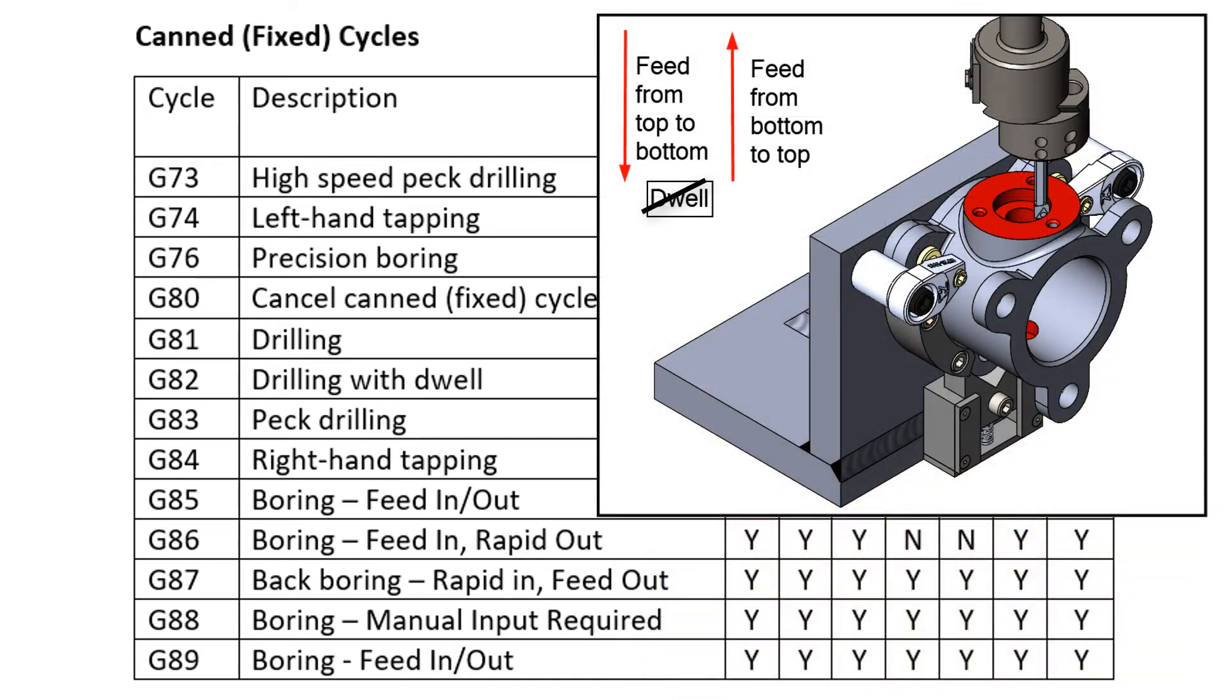The G85 will feed the tool in and out of the hole but will not allow a dwell at the bottom of the hole. It is used when issues such as concentricity, roundness, taper, or surface finish are not to the required specifications.